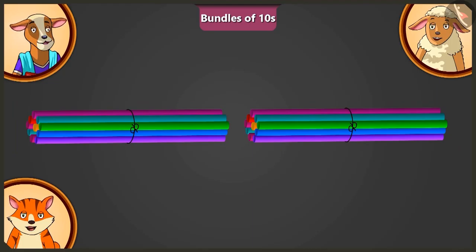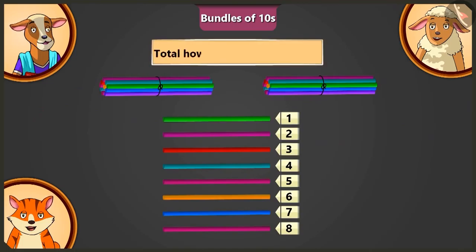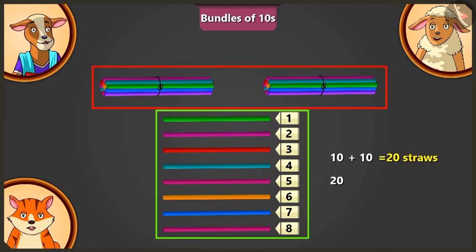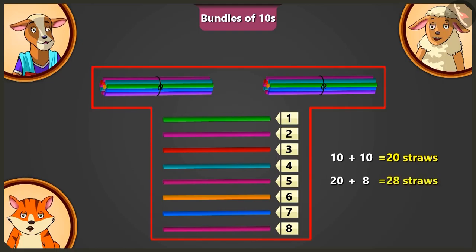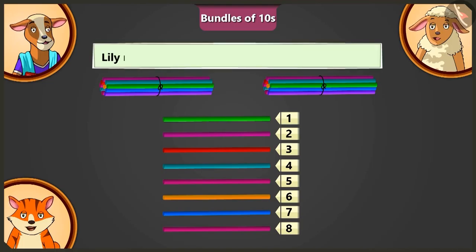Look, Billy, I am putting these 8 straws next to both the bundles. Now, tell me, how many straws are there in total? Adding 10 straws to 10 straws makes 20 straws, and adding 8 to 20 straws, there are 28 straws in total. Oh, wow! These are all the straws I want. Corrie Ma'am, but I need 45 straws. How will we count 45 straws?